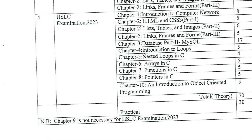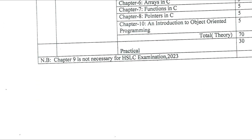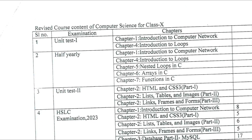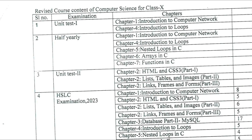Only Chapter 9 is not necessary for the HSLC examination. For the half-yearly exam, many students had confusion about whether Pointers would be included — Pointers are required for HSLC but not for the half-yearly exam. So for half-yearly, prepare only Chapters 1, 4, 5, 6, and 7. Thank you for watching, see you in a new video — till then, take care and bye.